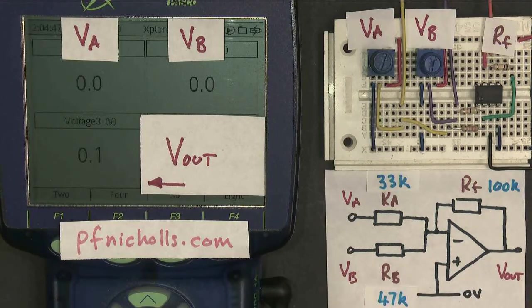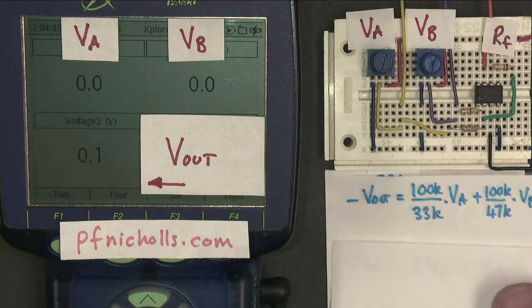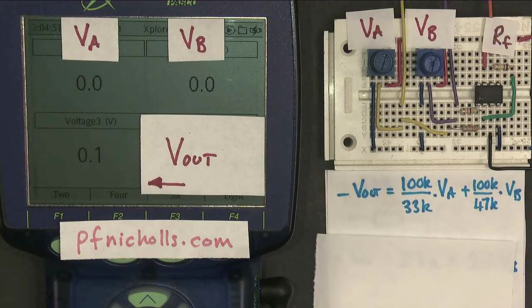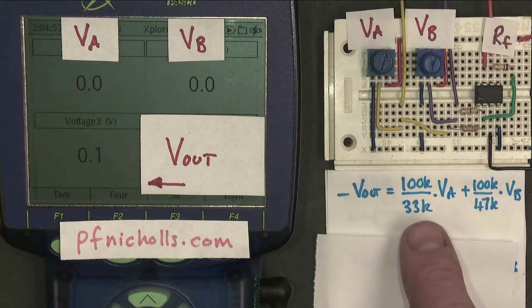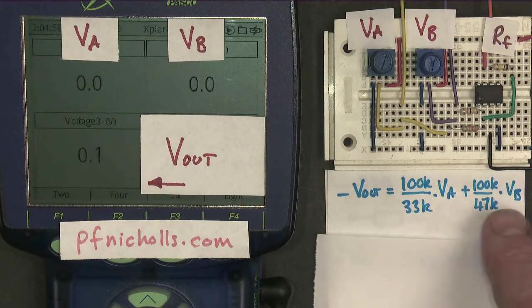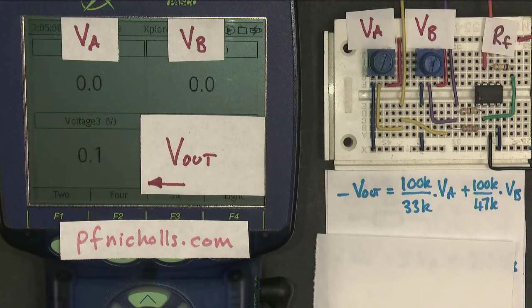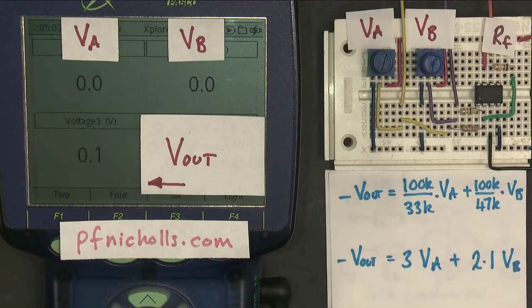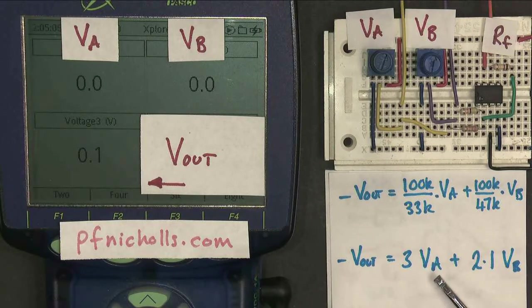So my output equation now becomes minus Vout is 100 over 33k times Va plus 100 over 47 times Vb. And when I do the math, I end up with that.